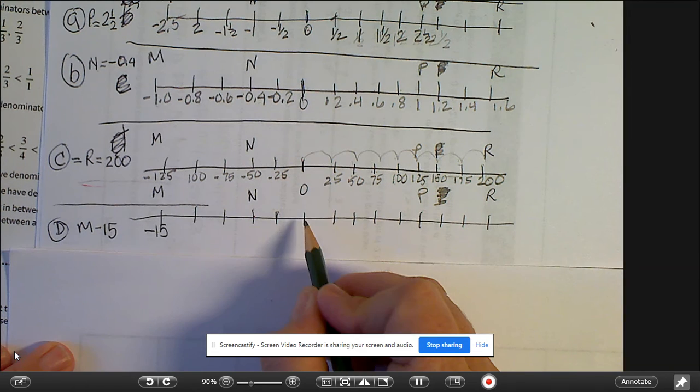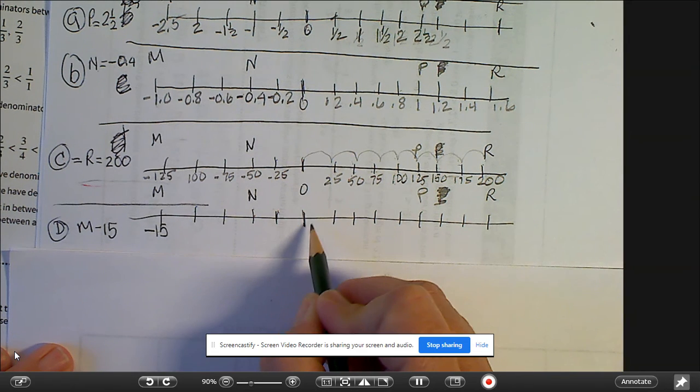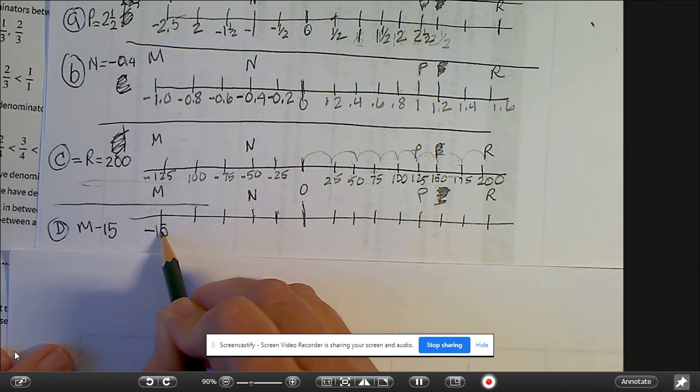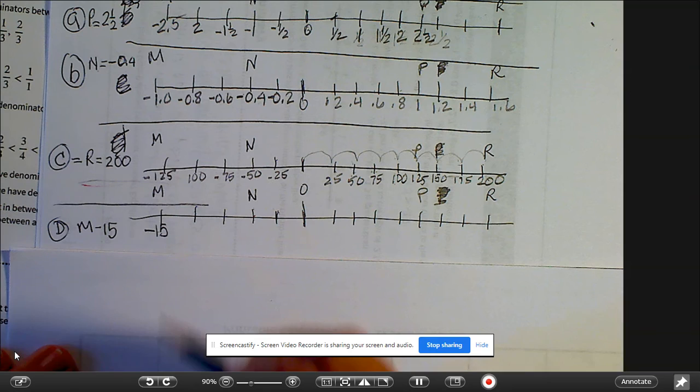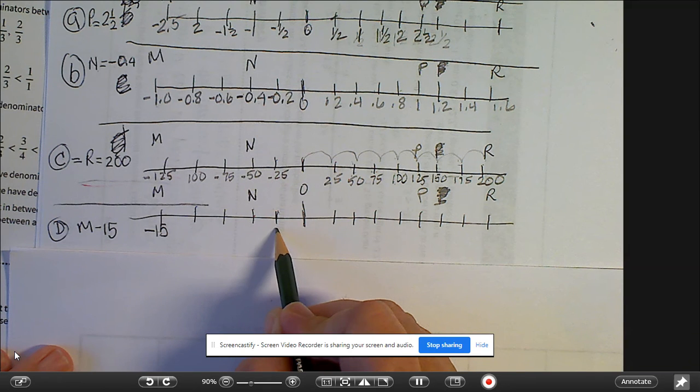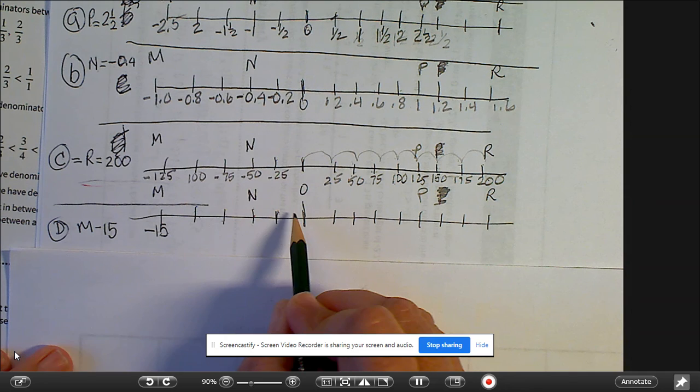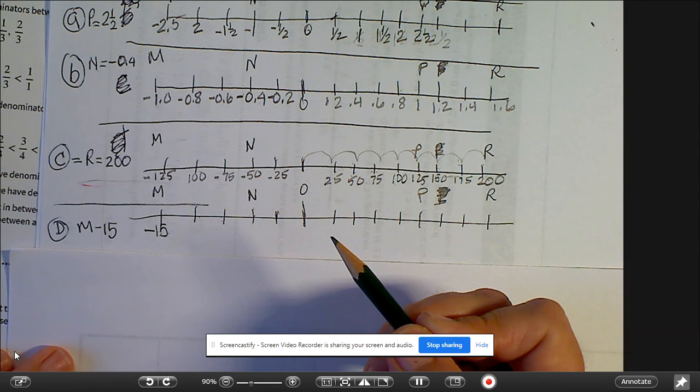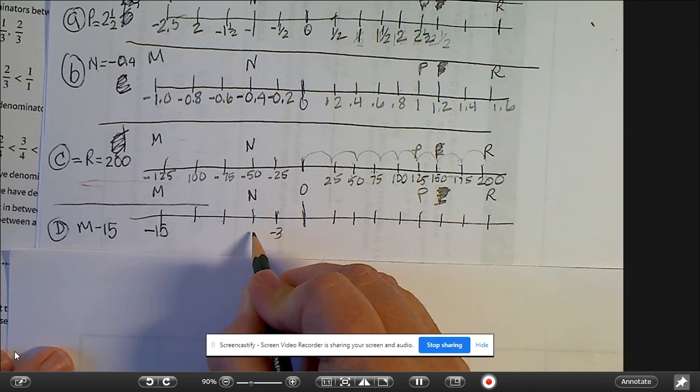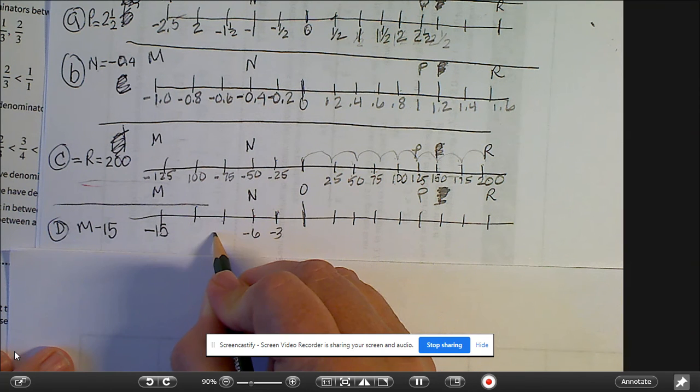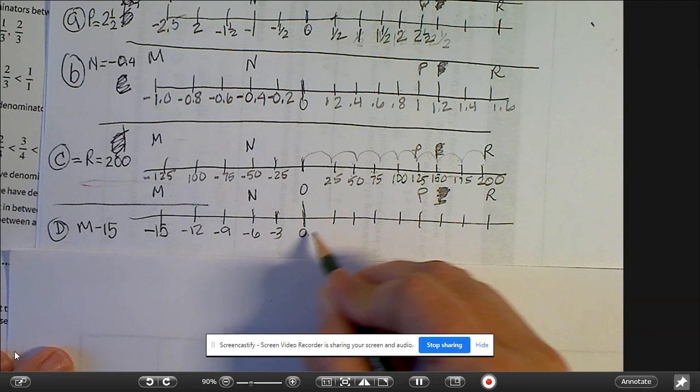Okay. And then on D, we have 0 here, and M is equal to negative 15. So if M is negative 15, let's see. So 15, there's one, two, three, four, five. 15 divided by 5 is 3. So we're counting by 3. Negative 3, negative 6, negative 9, negative 12, negative 15. This is 0.